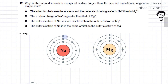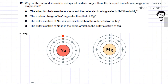In sodium, removing the first electron is the first ionization energy. When trying to remove the second electron, that second electron would be removed from an inner shell. Whereas in magnesium, the first ionization energy removes one outer electron, and the second electron would also be removed from the outermost shell.